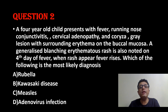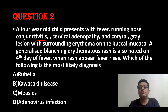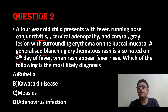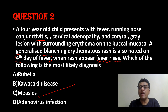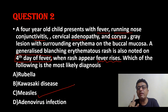Now read the second question carefully. A four-year-old child presented with fever, running nose, conjunctivitis, cervical lymphadenopathy, and coryza. Gray lesion surrounded by erythema on buccal mucosa. Generalized blanching rash on the fourth day of fever. Key point: when rash appears, fever rises. Fourth day rash with fever rising — it has to be measles.